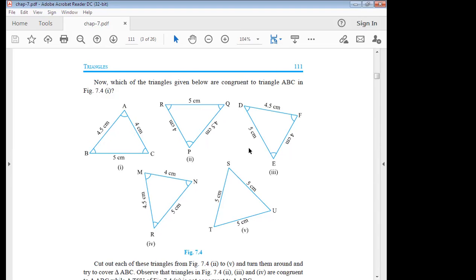Similarly, triangle PQR, triangle DEF, and triangle MNR having the same dimensions. But look at here. In this triangle STU having all sides equal 5cm each. That's why here triangle ABC is congruent to triangle PQR, DEF, and MNR but not congruent to triangle STU.